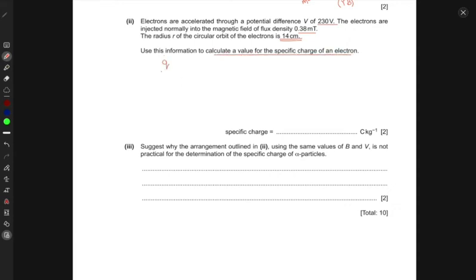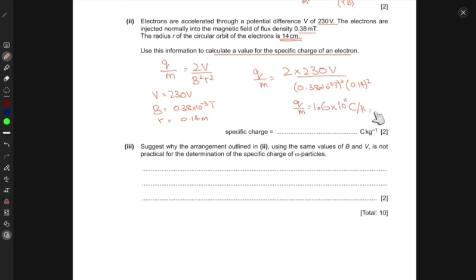Clearly, the specific charge of the electron we just wrote down is equal to q over m equals 2V over B squared r squared. Now we have the value for the potential difference as 230 volts, the magnetic flux density 0.38 times 10 to the power minus 3 tesla, and the radius as 0.14 meters. This would be 2 times 230 volts divided by 0.38 times 10 to the power minus 3 tesla squared times 0.14 squared. This gives me q over m being equal to 1.6 times 10 to the power 11 coulombs per kilogram.